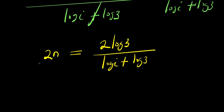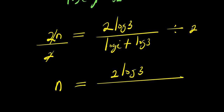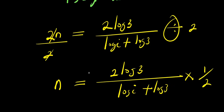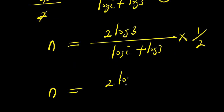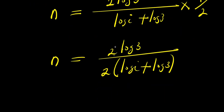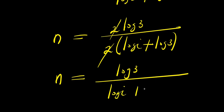To isolate n, I divide both sides by 2. So we have n equals 2 log 3 divided by log i plus log 3, times 1 over 2. So n equals 2 log 3 divided by 2 times log i plus log 3. The 2 here cancels the 2 here. We have n equals log 3 divided by log i plus log 3. We leave it this way — so this is our answer.